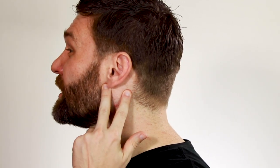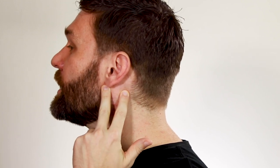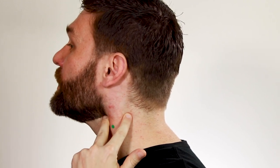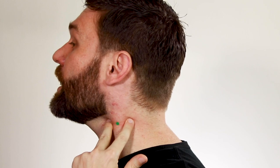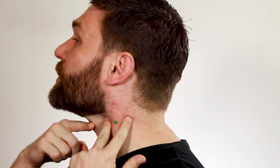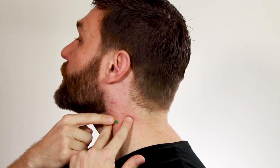The other thing you can do is remember that the M in SCM means mastoid process. You can come up here and feel for the anterior and posterior borders of the mastoid process, and then palpate down onto the muscle. And then LI18 is level with the laryngeal prominence between the two borders.